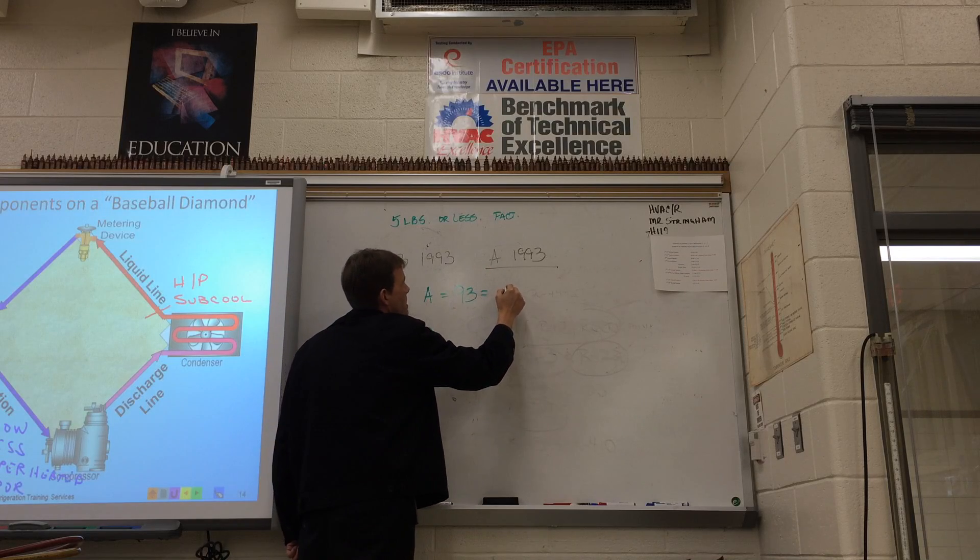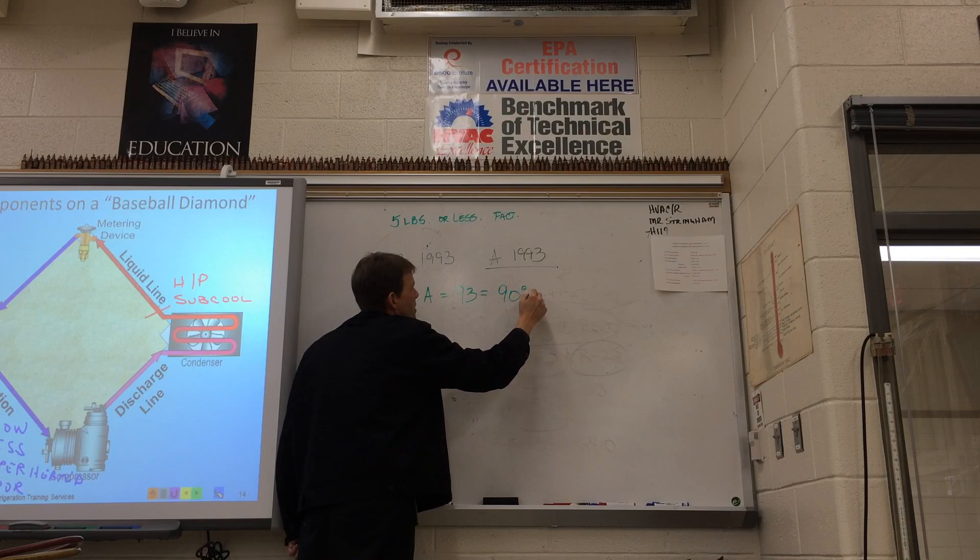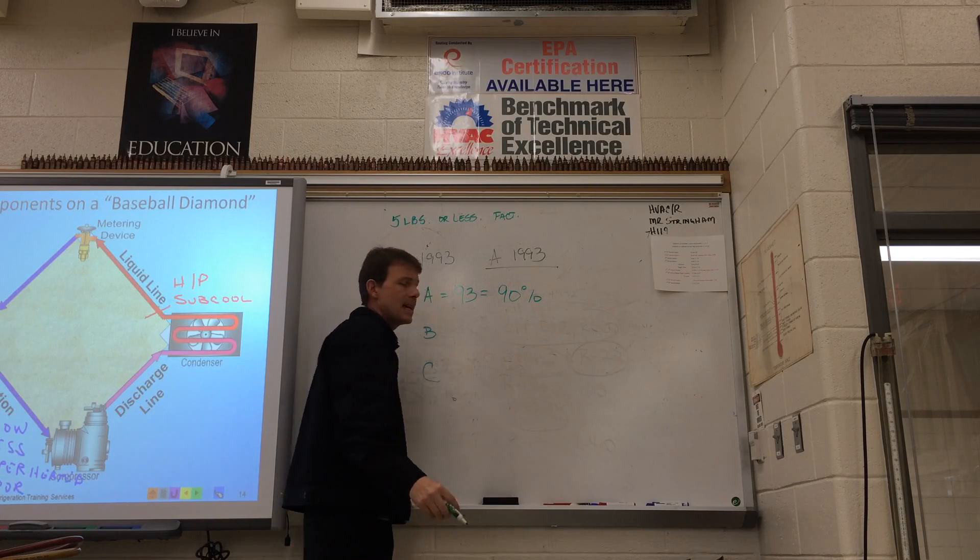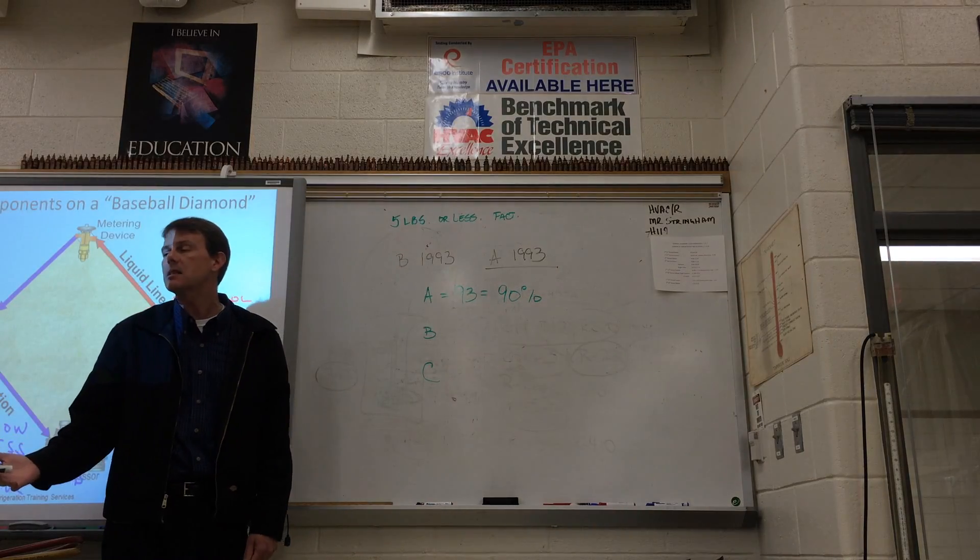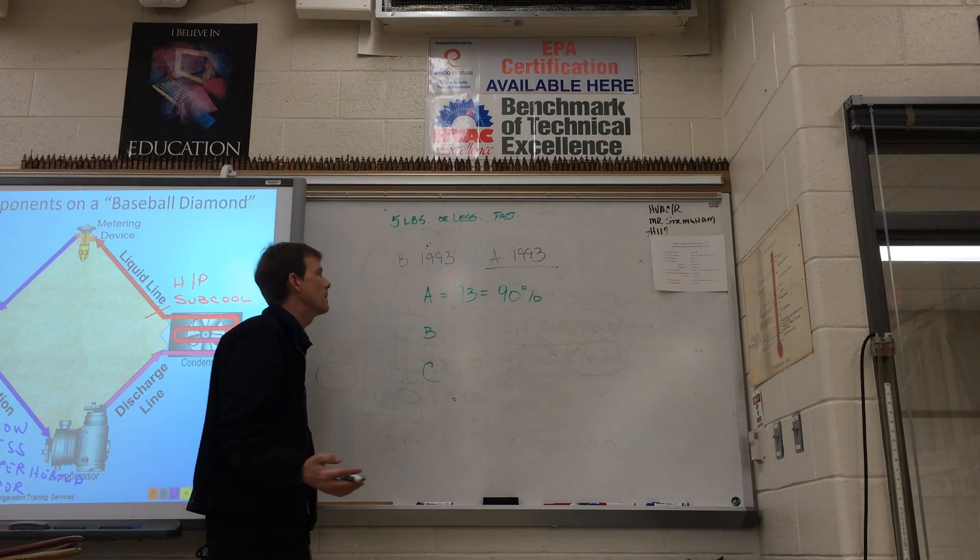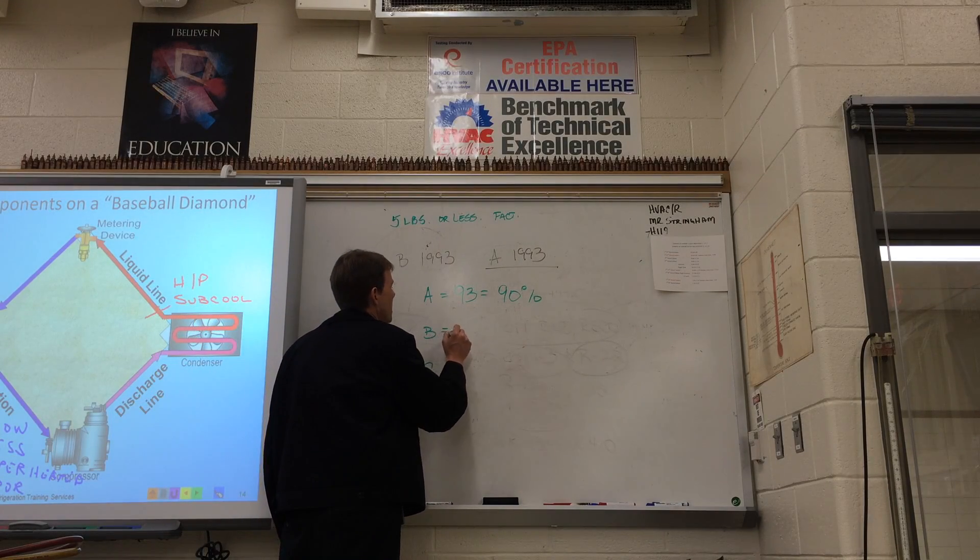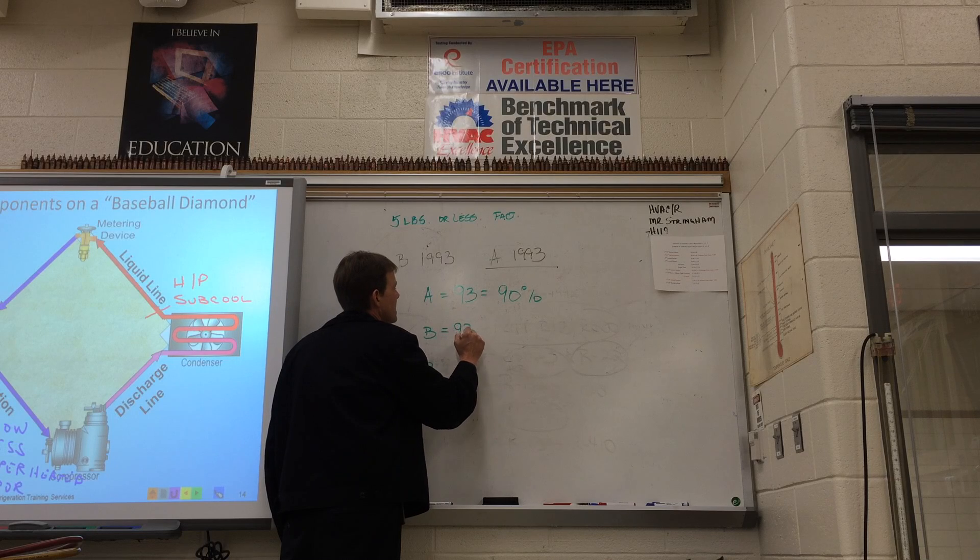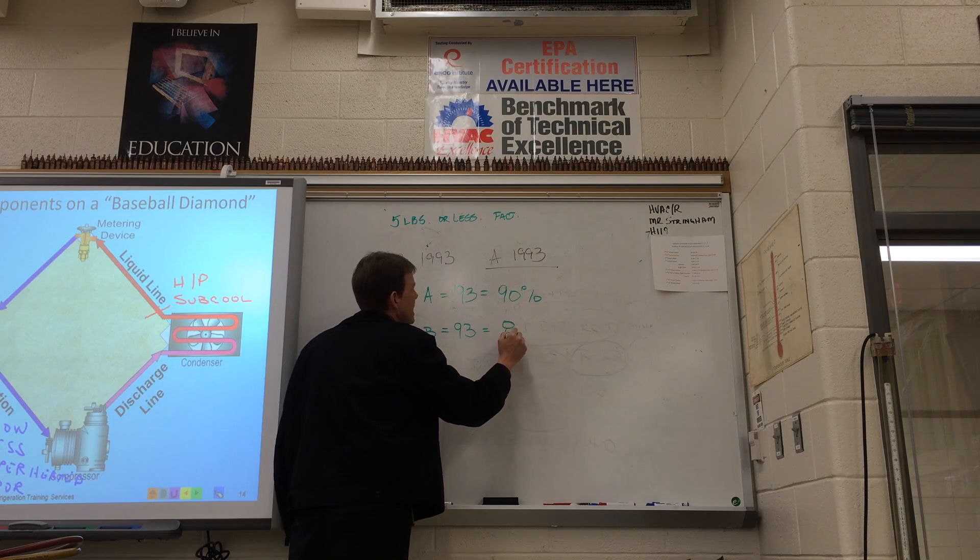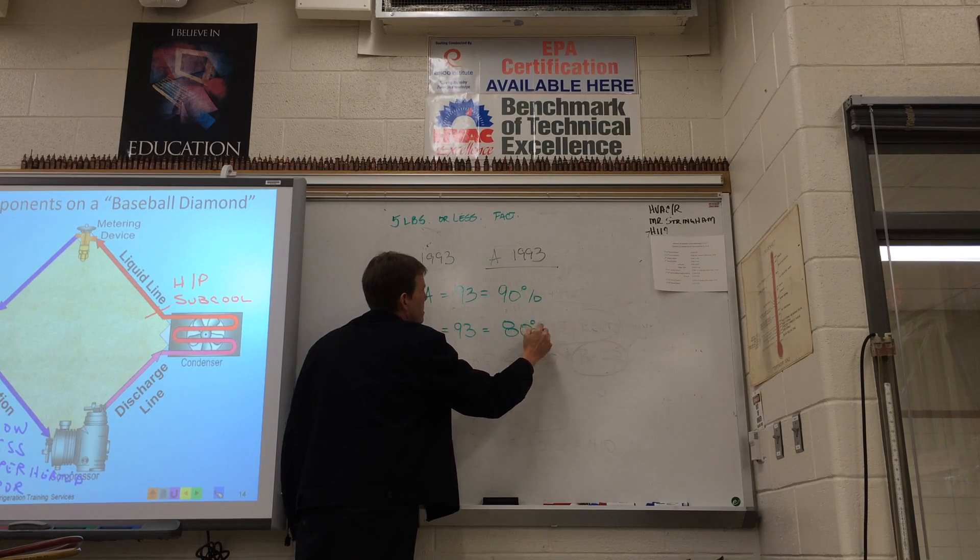That means if the compressor's running, you've got to get 90% of the refrigerant. So let's say it had 10 ounces, you've got to get 9 out of the 10 ounces before you can open the system for repair. If your recovery machine was made before 1993, you only needed to get 80% of the refrigerant.